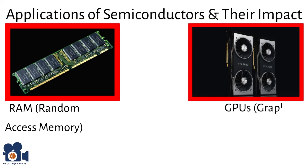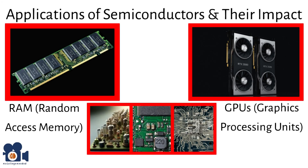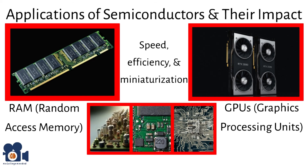Additionally, graphics processing units (GPUs), essential for rendering images and video, rely on semiconductor technology for fast and efficient processing. The biggest impact of semiconductors has been on speed, efficiency, and miniaturization. These advances have led to faster, more efficient processors enabling high-speed computing and multitasking. Miniaturization has resulted in smaller, more powerful chips, allowing for the development of compact laptops, tablets, and other portable computing devices.